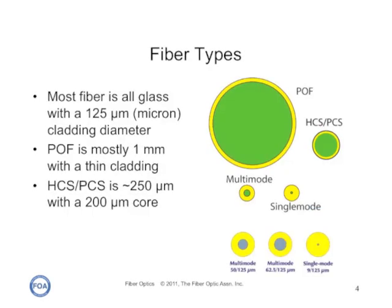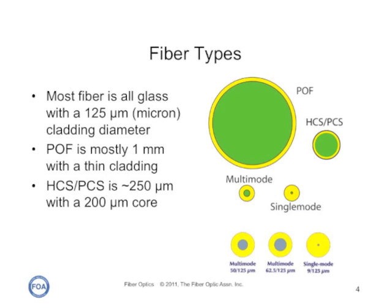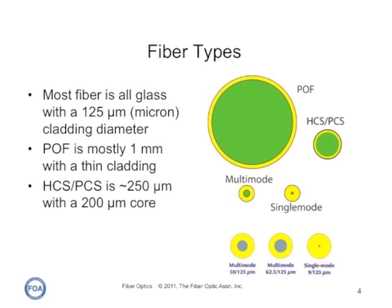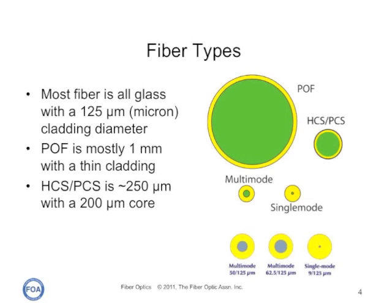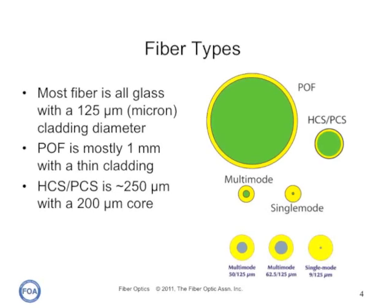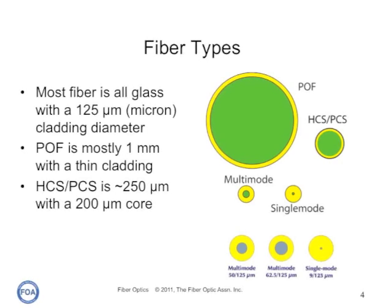We're going to do it with a large core step index fiber. The step index fiber we're going to use is a very large core, about 12 millimeters, and is typical with plastic optical fiber. It has a large core and a relatively thin cladding, which makes it very easy to demonstrate total internal reflection on this particular fiber. Let's look at what happens.